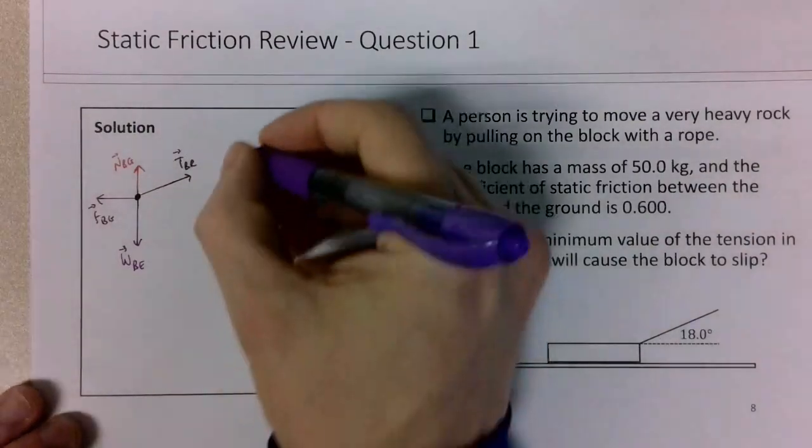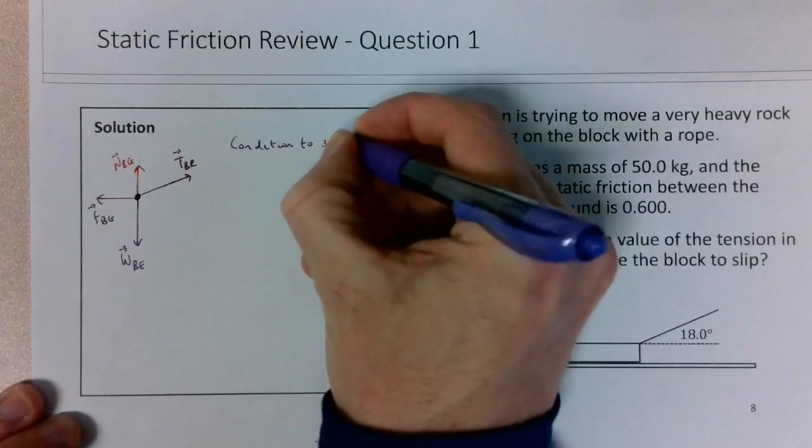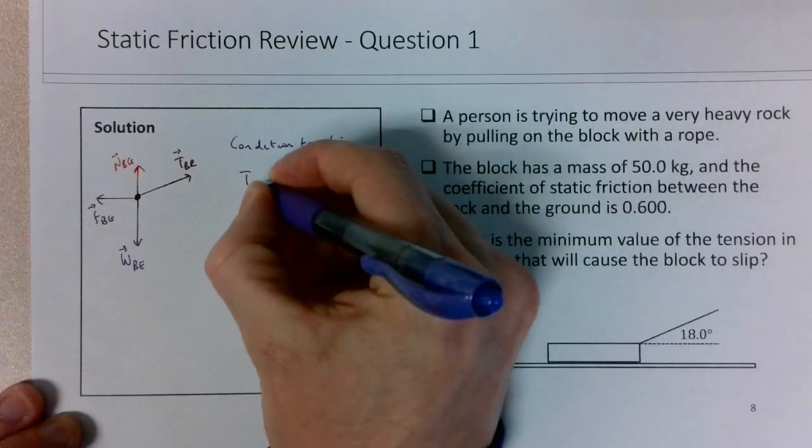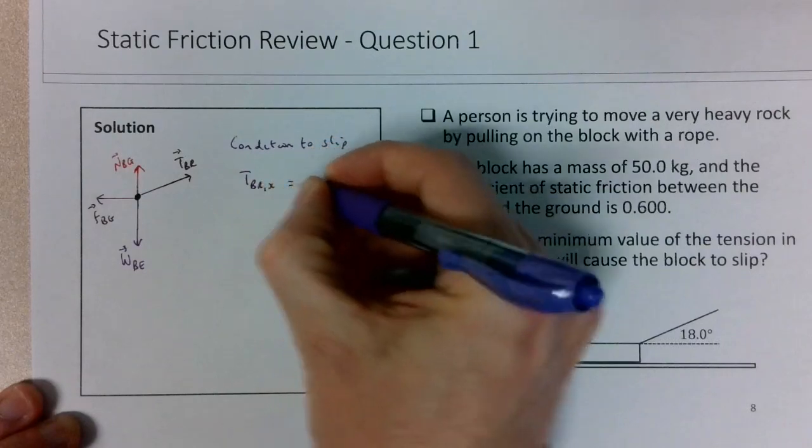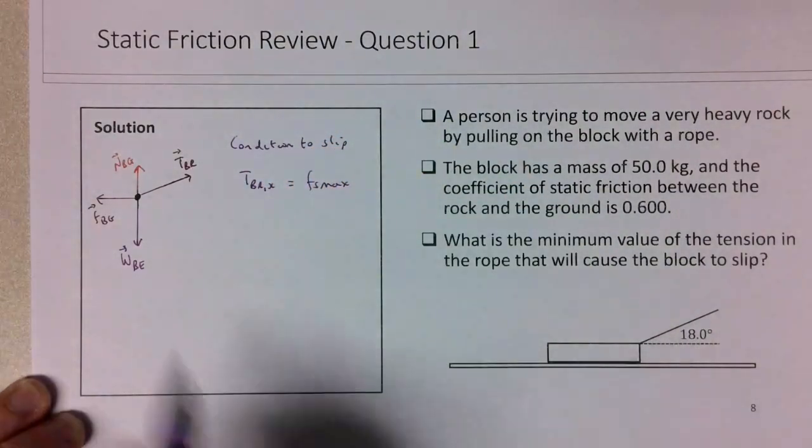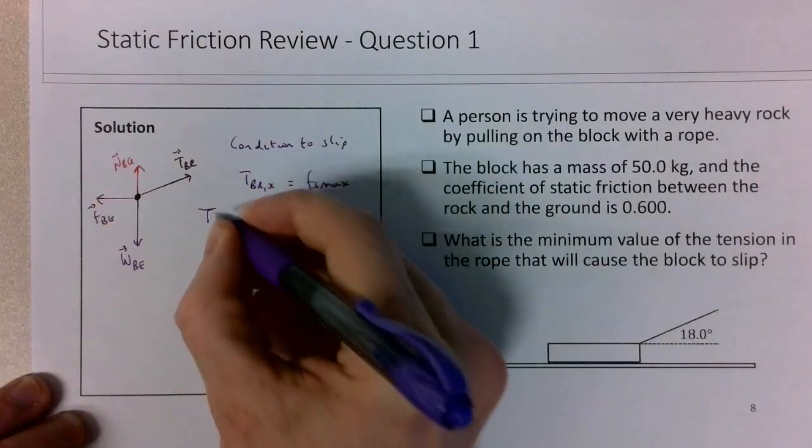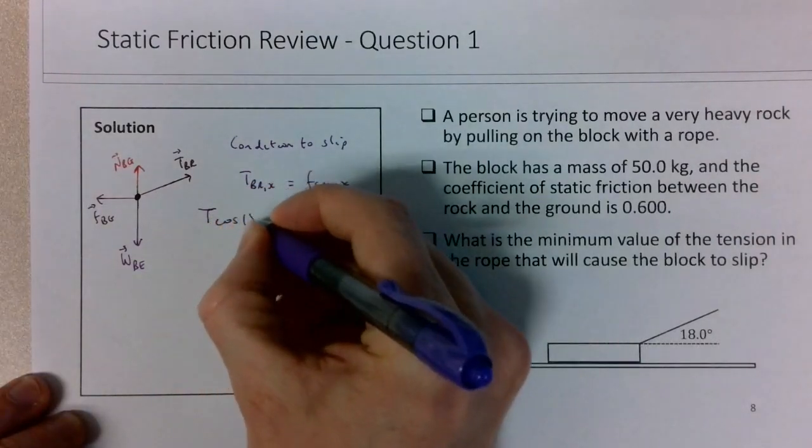So for the block to... So for the condition to slip, T_x has to be equal to F_s_max. So that the x-components... And we're trying to solve for the tension. So we know that the tension T_x is going to be equal to the tension times the cosine of 18 degrees.